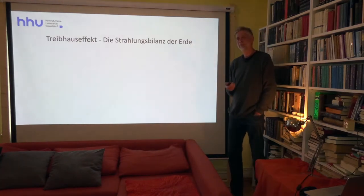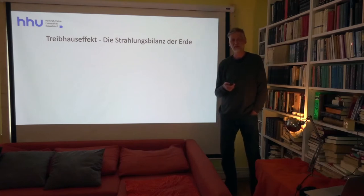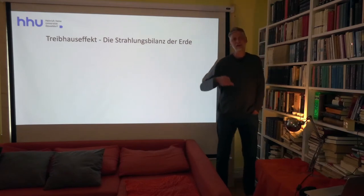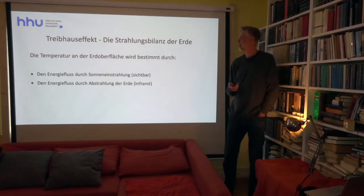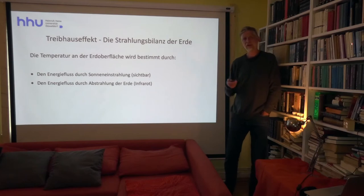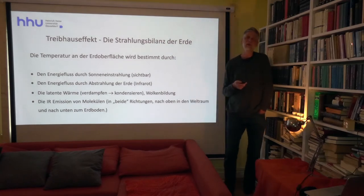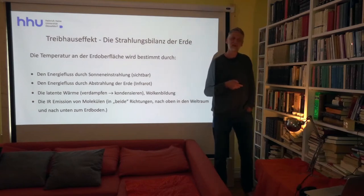Um die Temperaturänderung physikalisch zu beschreiben, müssen wir uns die Strahlungsbilanz ansehen. Was natürlich passiert: Es wird Energie durch die Sonne auf die Erde eingestrahlt, die Erde verliert Energie durch Abstrahlung, und zwischen diesen beiden Prozessen gibt es ein Gleichgewicht. Die Lage dieses Gleichgewichts entscheidet darüber, was für eine Durchschnittstemperatur auf der Erde herrscht. Wir haben Energieeinstrahlung durch die Sonne im sichtbaren Bereich sowie Abstrahlung der Erde im Infrarotbereich. Dann gibt es noch latente Wärme durch Verdampfen und Kondensieren, also Wolkenbildung.